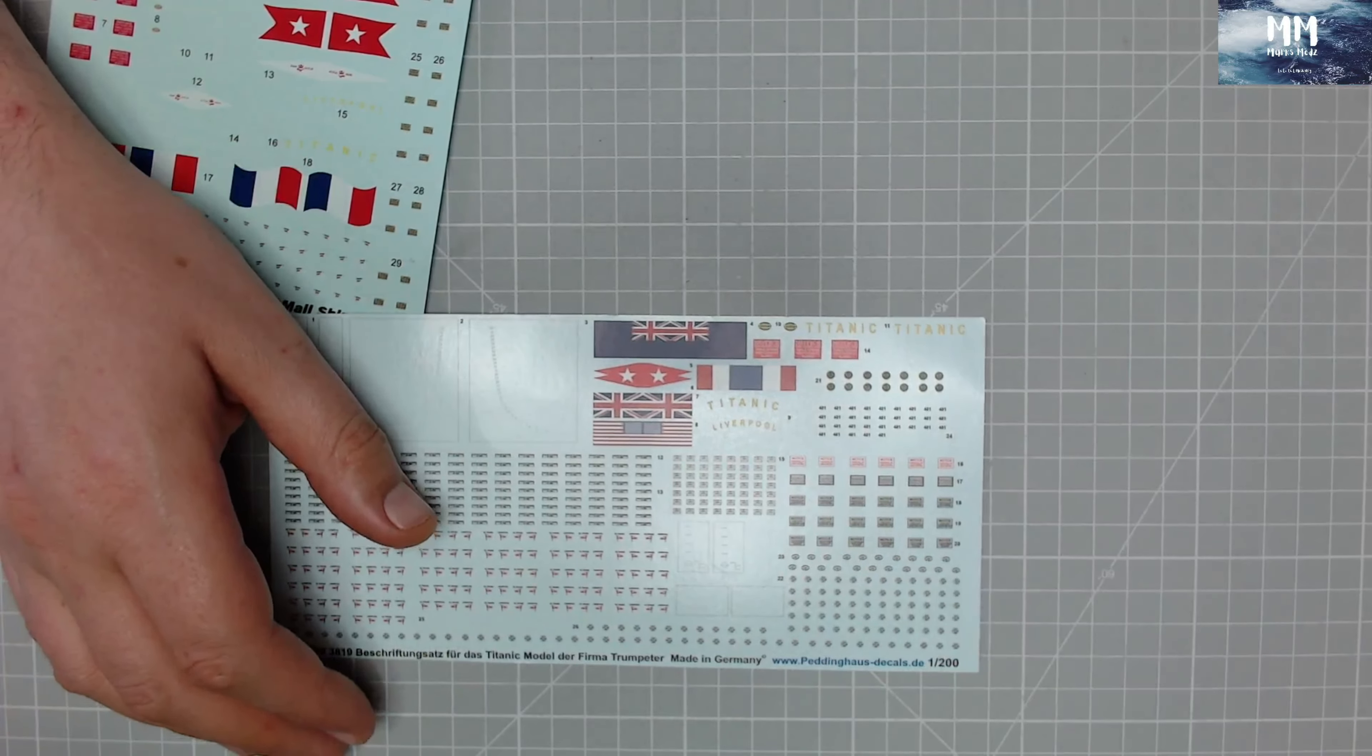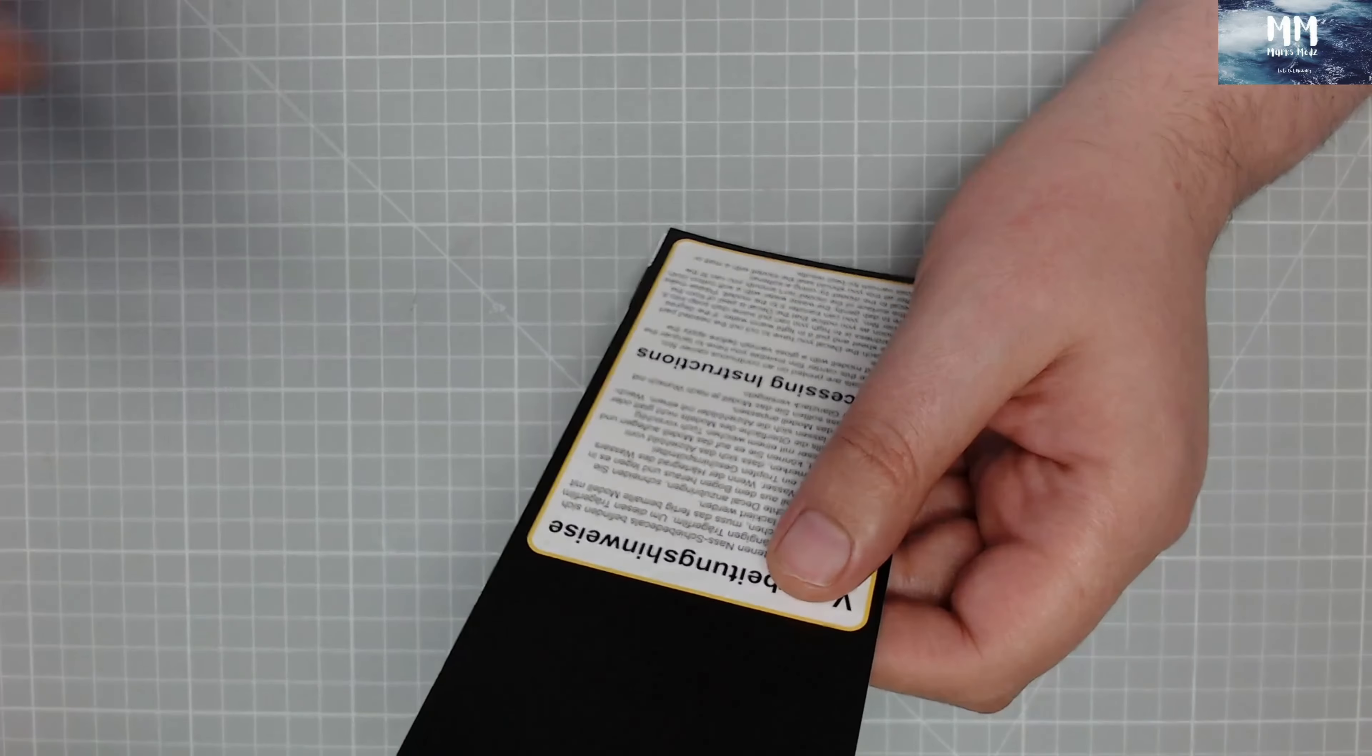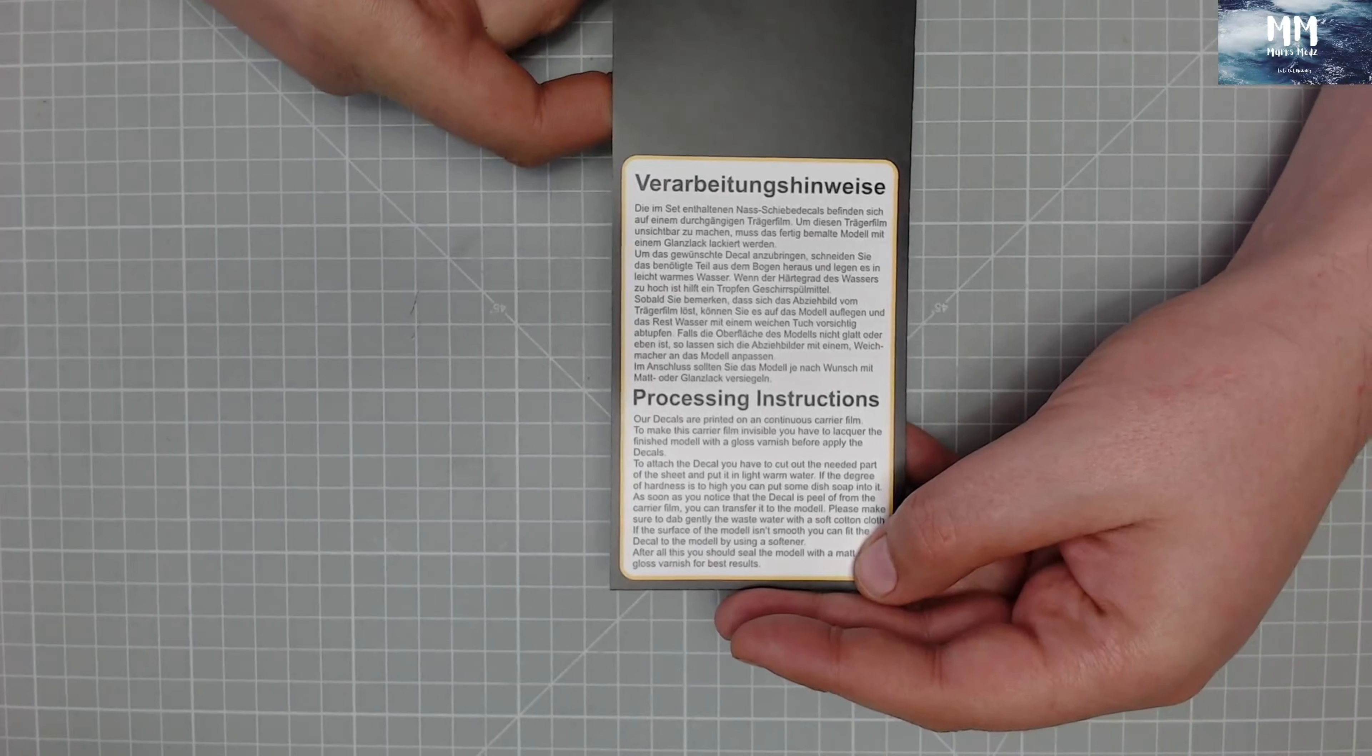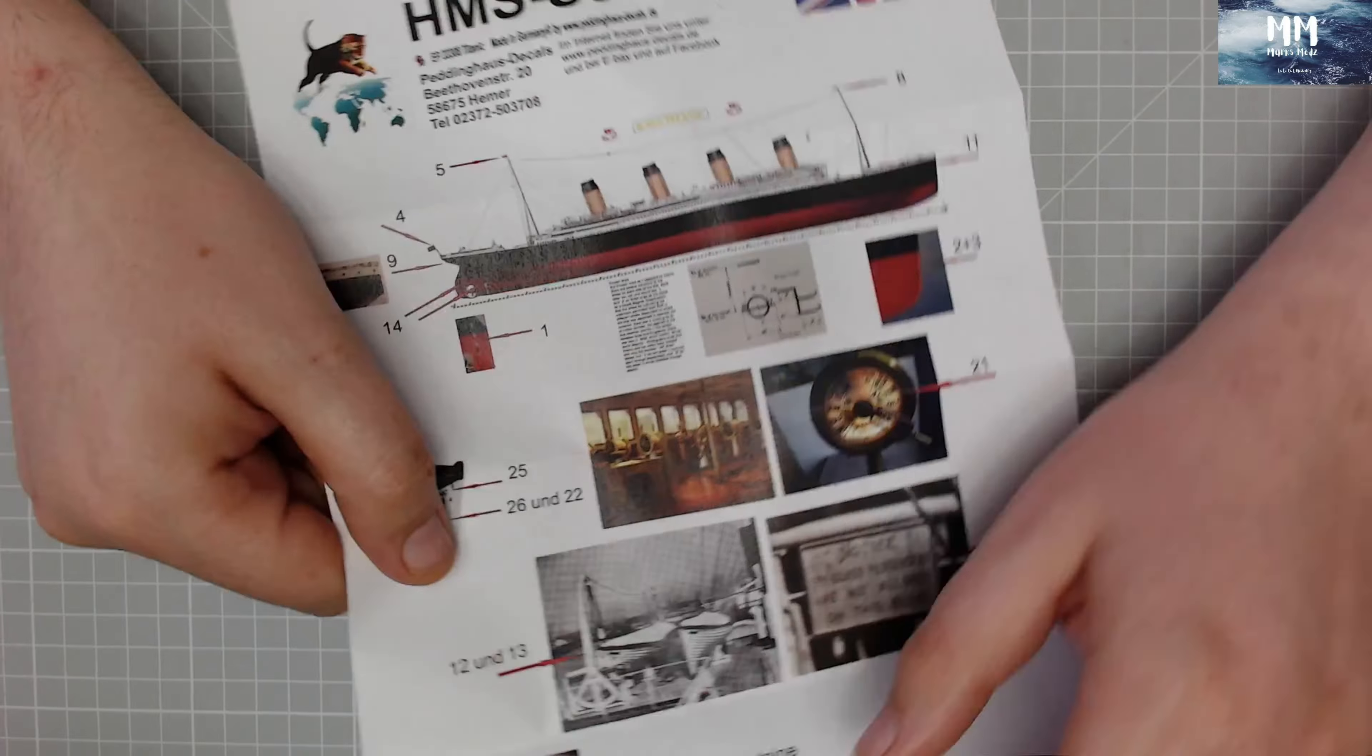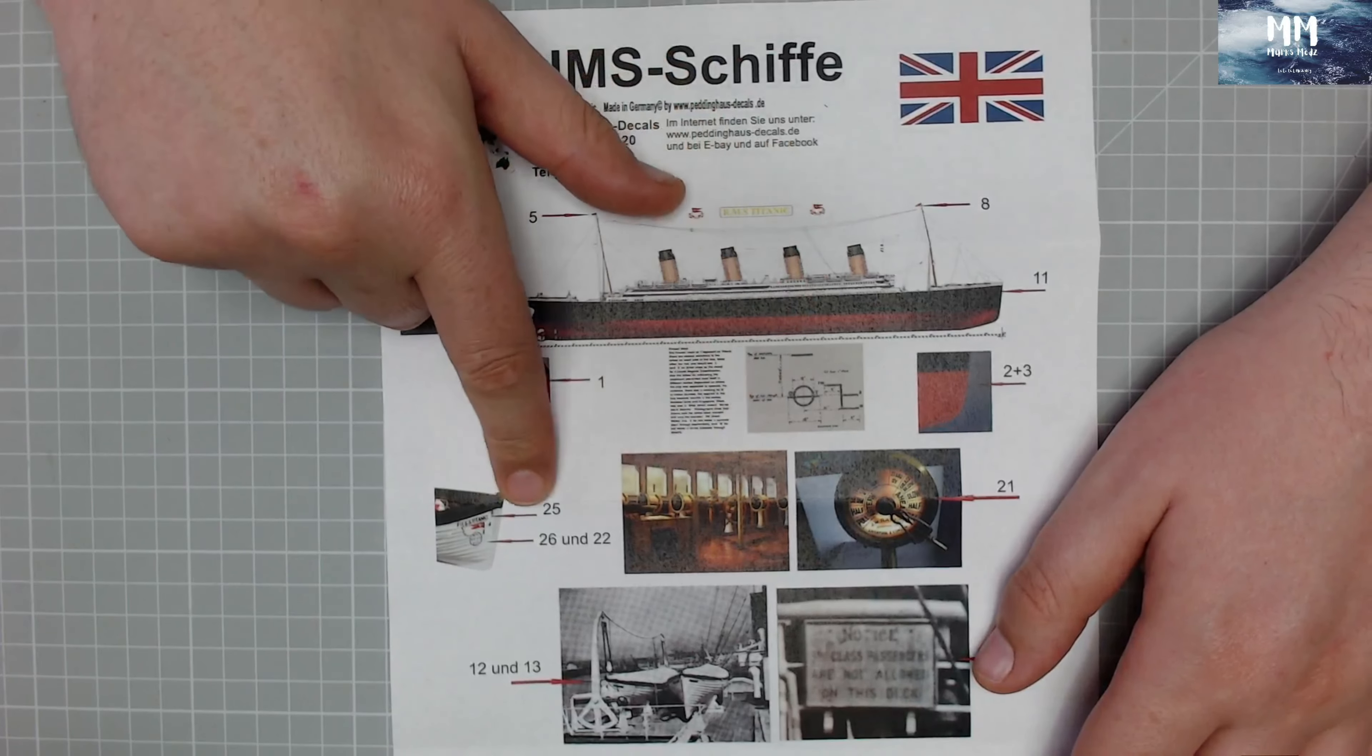This kit is from Peddington House decals. And like I said, this is from Germany. We've got a bit of an information sheet there. We've got processing instructions. We've got the address. And then as you can see here, we do get a sheet explaining where some of these new decals are going to go.